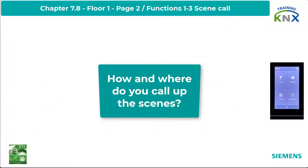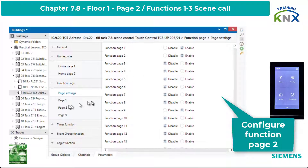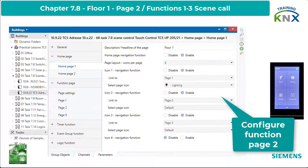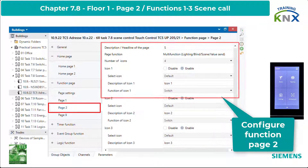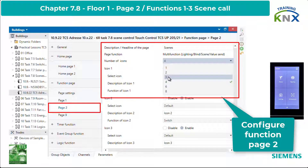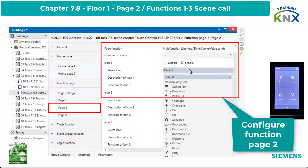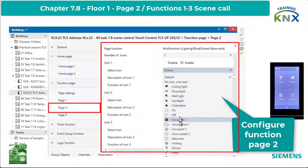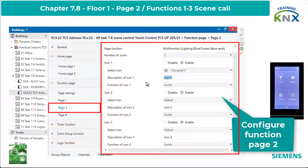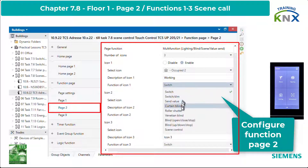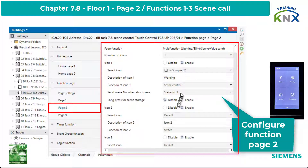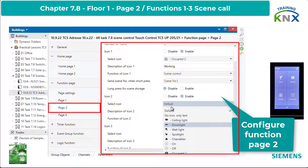Now let's proceed to how and where to call up the scenes. I create another function page for this — number 2 — to be opened via main page 1. In the page settings, function page 2 is enabled and gets the name Scenes. The number of symbols is set to 3. For symbol 1, Occupied 2 is selected, text Working is entered, and Scene Control with number 1 is set as the function. Saving is disabled.